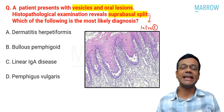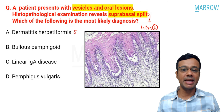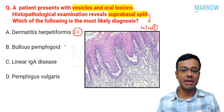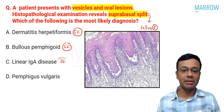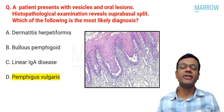It is an intraepidermal blistering disorder. Out of the given options, dermatitis herpetiformis is a subepidermal disorder. Bullous pemphigoid is also a subepidermal blistering disorder. Linear IgA disease is also a subepidermal blistering disorder. That is why the correct answer to this question is pemphigus vulgaris.